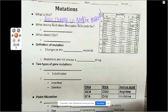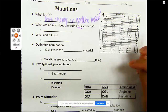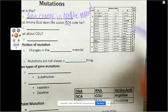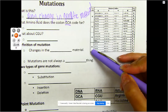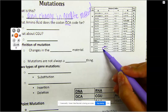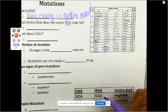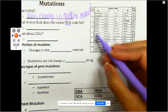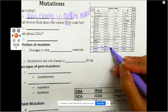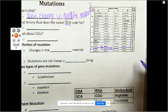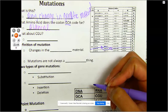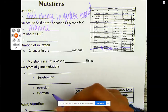What amino acid does the codon GCA code for? Using this chart, I'm looking for GCA. I'm going to use my first letter, go down to G, go over to C. Letter A here is for alanine. I used G, gone over to the C box, and then narrowed it down with the A on the right-hand side. So alanine is going to be our amino acid.